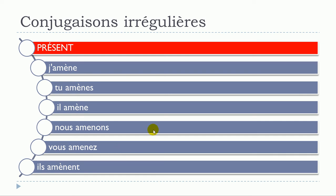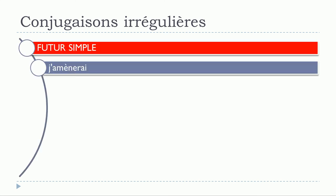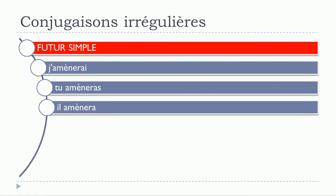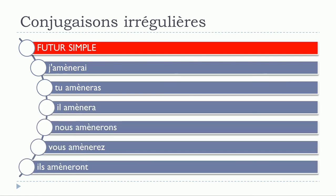For the futur simple: j'amènerai, tu amèneras, il amènera, nous amènerons, vous amènerez, ils amèneront. We can see that all the forms are concerned and all the forms are modified.